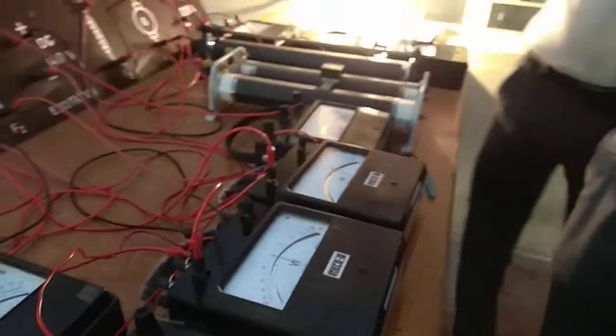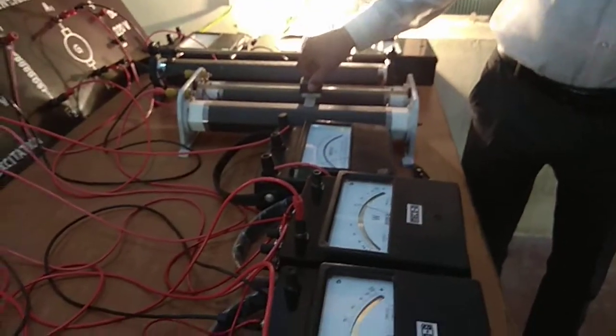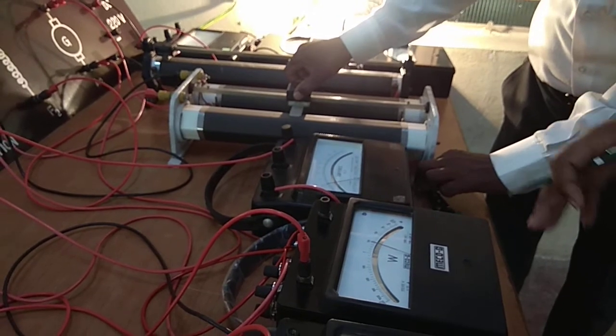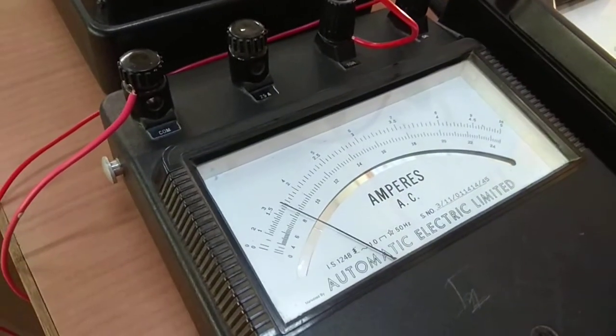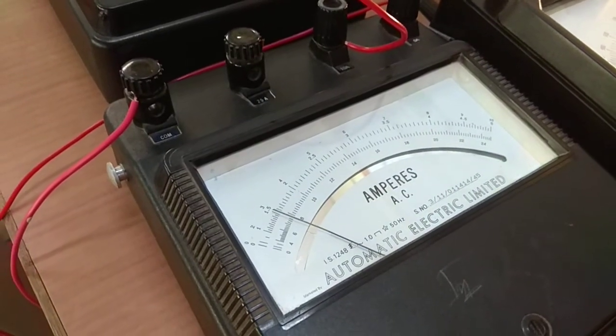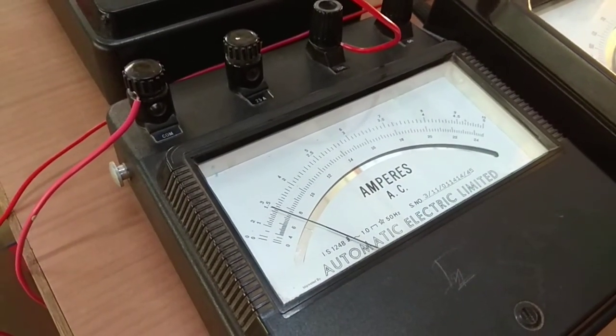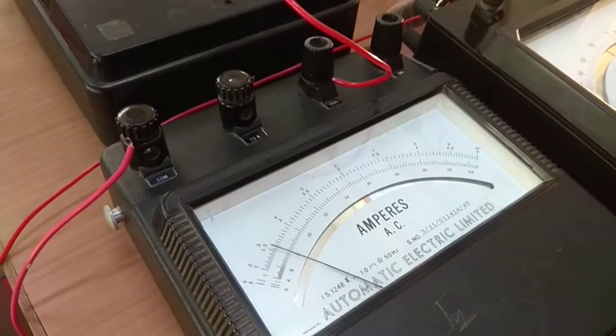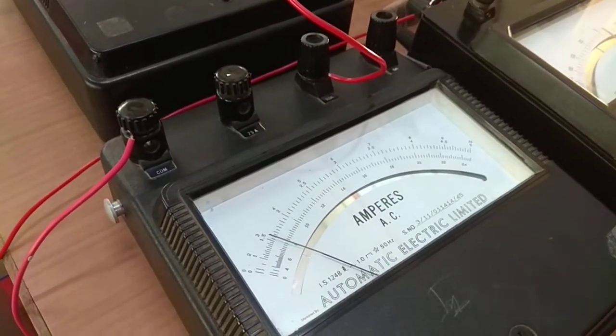So once again here, we can decrease the field resistance of synchronous machine, so that the armature current goes on decreasing. And at one stage, the armature current reaches its minimum value. And if we further decrease the field resistance of synchronous machine, the armature current increases.